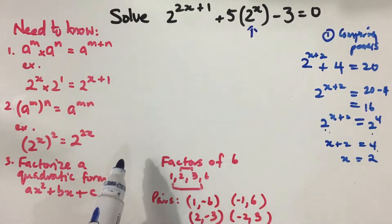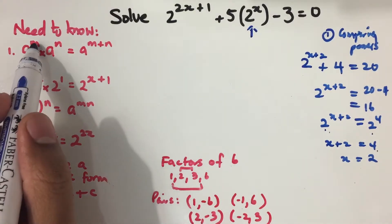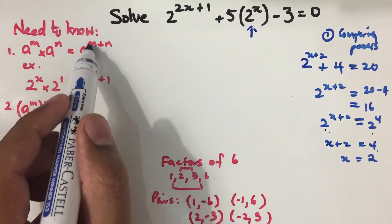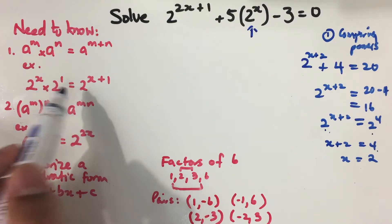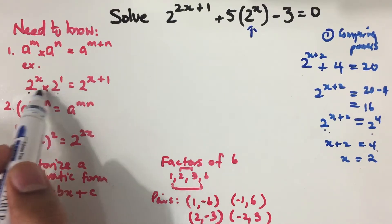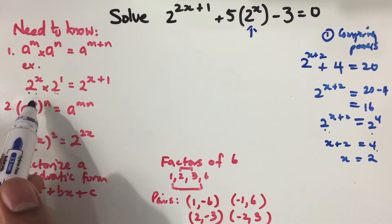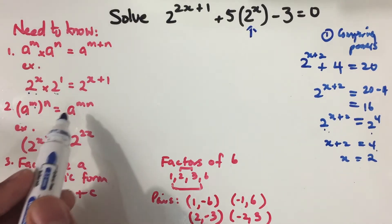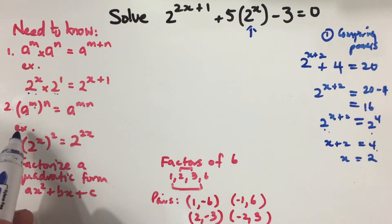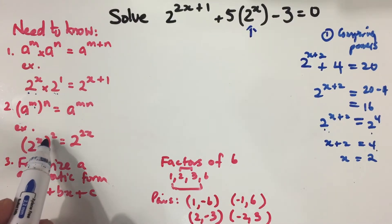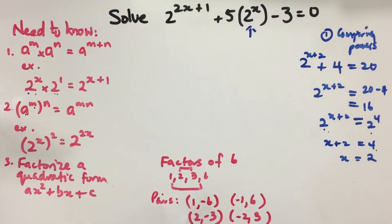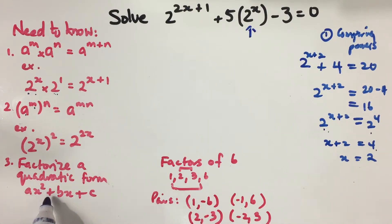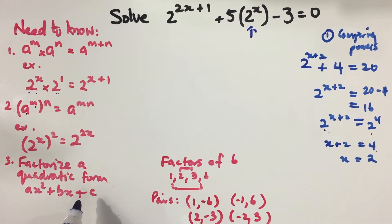There are some things we need to know before we start. First, a to the power of m times a to the power of n equals a to the power of m plus n. For example, 2 to the power of x times 2 to the power of 1 equals 2 to the power of x plus 1. Second, a to the power of m to the power of n equals a to the power of m times n. For example, 2 to the power of x to the power of 2 equals 2 to the power of 2x. We also need to know how to factorize a quadratic form ax squared plus bx plus c.